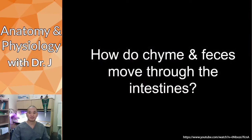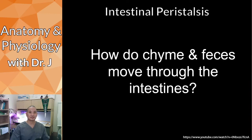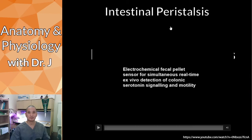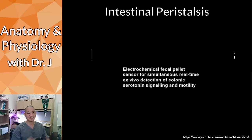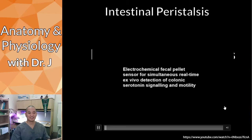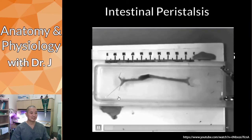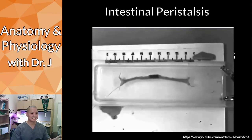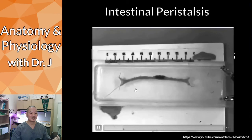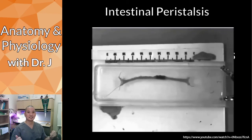So how do chyme and feces move through the intestines? This is from another lab — a medical school professor who specializes in measuring the effects of drugs and chemicals on intestinal activity. He invented an assay using guinea pig intestines: he pins a segment, takes a fecal pellet, puts it in, and that small segment of intestine actually moves the pellet through a solution by itself — no brain attached.